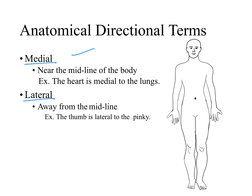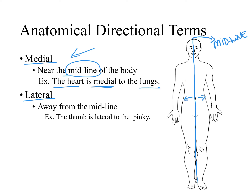Medial and lateral. Medial refers to something closer to the midline of the body — for example, the heart is medial to the lungs. Lateral is when something is away from the midline, towards the sides — such as the thumb in anatomical position being lateral to the pinky. In anatomical position, the palms face forward, so the pinky is medial and the thumb is lateral.